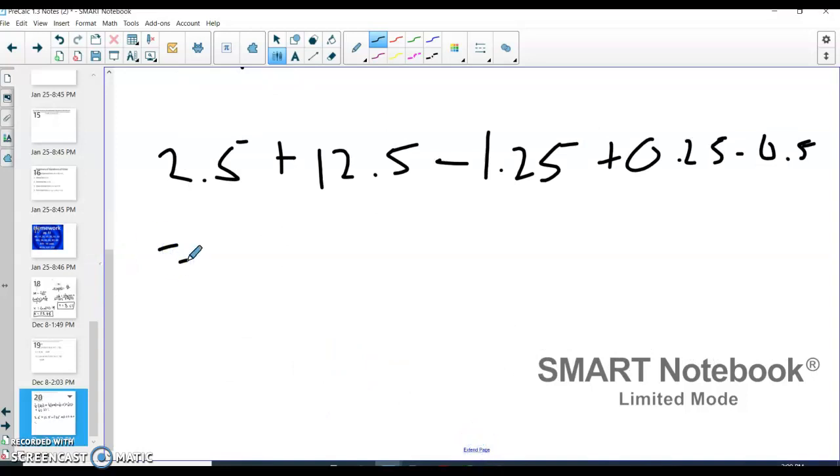Now I'm going to add all these up using my calculator. So I do 2.5 plus 12.5 minus 1.25 plus 0.25 minus 0.5, and I got $13.5 is my expected value after 1 spin. So if I want 10 spins, I need to multiply this by 10, and I got my expected value to be $135 after 10 spins.